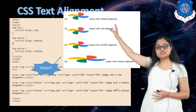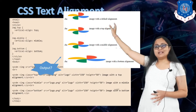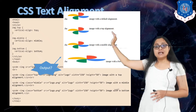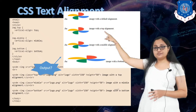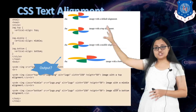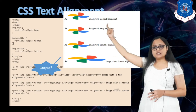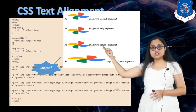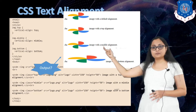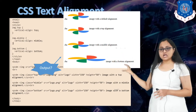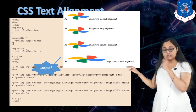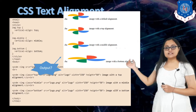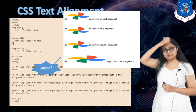This is the output. The first image has its default alignment, which is bottom. The next image has top alignment of text — you can see the text is aligned on the top side of the image. For the next image the text is aligned on the middle portion, and for the last image the text is aligned on the bottom portion, because I have given that alignment.